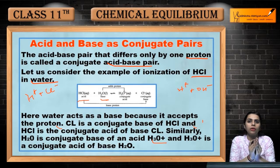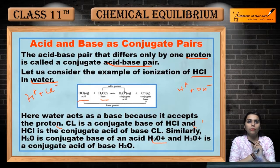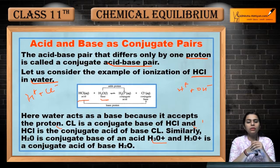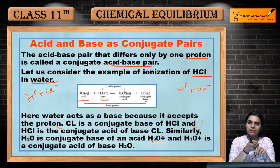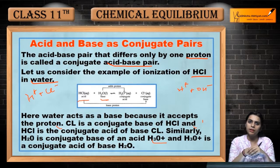So this was our Bronsted-Lowry acid-base concept. The new concept from it is the conjugate acid and base pair — these are very important questions. If you are given any reaction for one or two marks, you will be asked which is the conjugate base and which is the conjugate acid. You should know that whenever an acid donates its proton, it becomes the conjugate base. And when the base accepts that same proton, it becomes the conjugate acid.